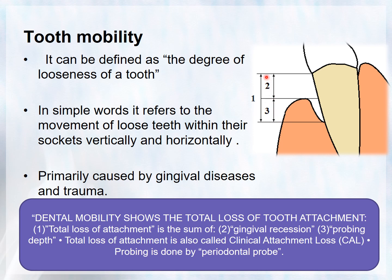The total attachment loss is called clinical attachment loss, and probing can be done by periodontal probe. This whole attachment loss is directly proportional to the dental mobility or tooth mobility.